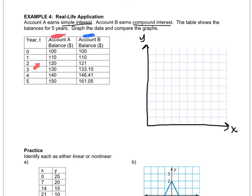Then you'll plot 1, 110, 2, 120, 3, 130, 4, 140, and 5, 150. So these are the ordered pairs you're going to plot.